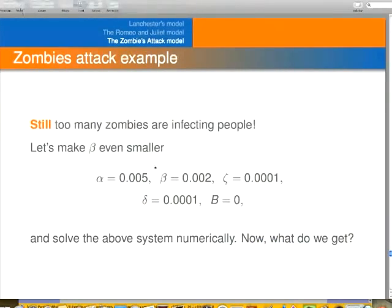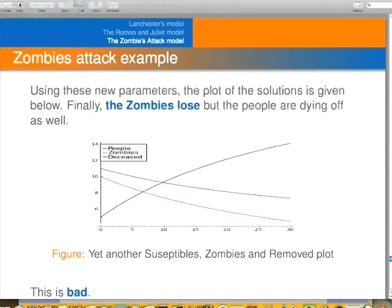Let's try this again. Let's make beta even smaller. See what happens. Okay. Well, the zombies are dying off and the people are also dying off, unfortunately. So that's still not good. You don't want the people to be dying off.